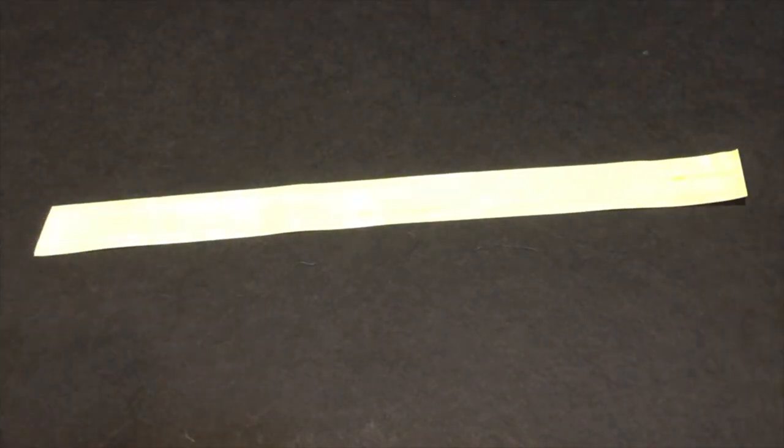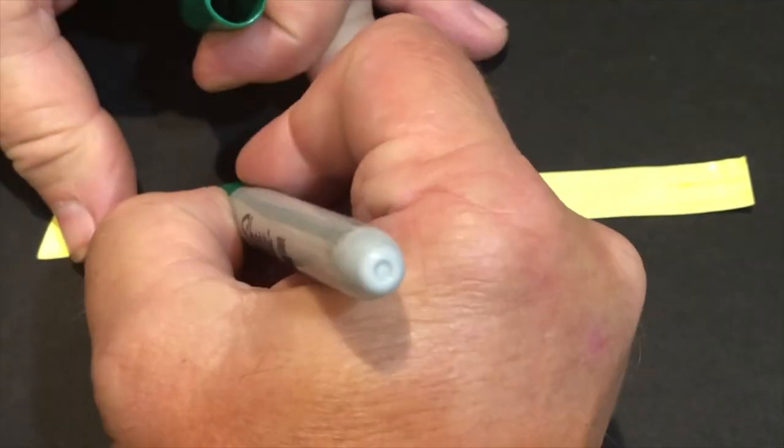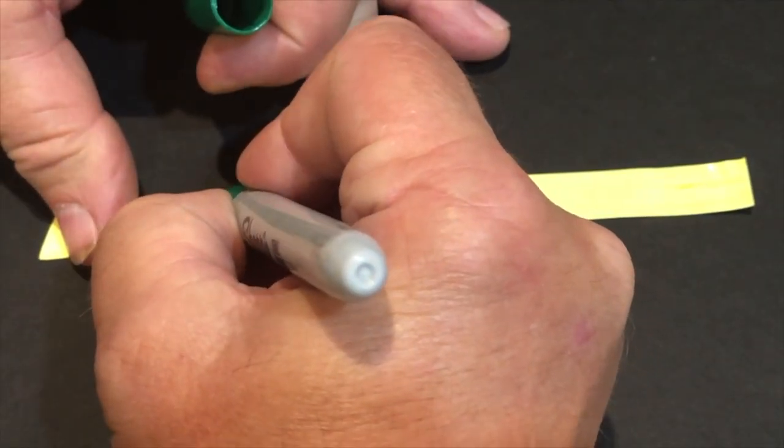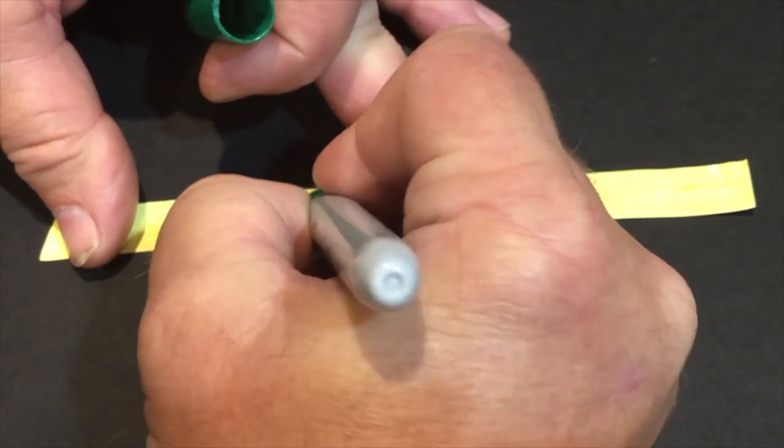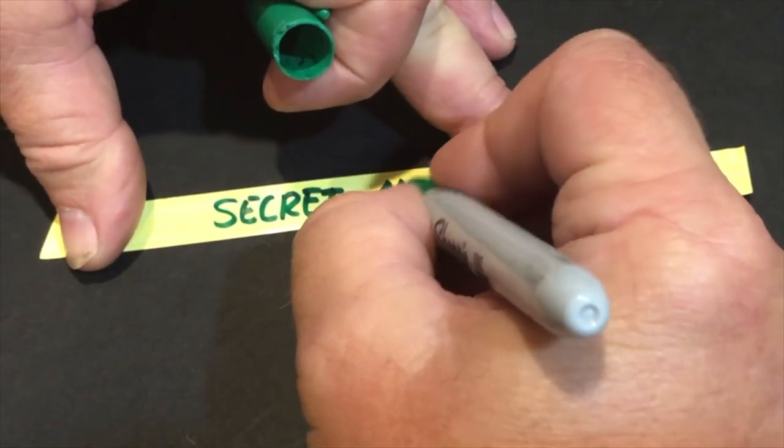So you're going to write down the message. You take your Sharpie. I'm using the yellow tape here. I know the light's a little bit not showing it exactly, but it was much easier to use the yellow tape. It's a lot thicker and easier to work with.